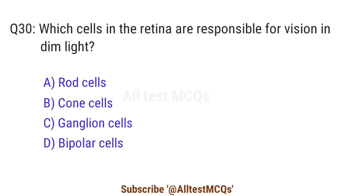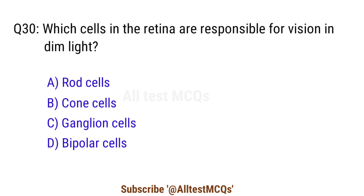Question 30. Which cells in the retina are responsible for vision in dim light? The right answer is option A. Rod cells.